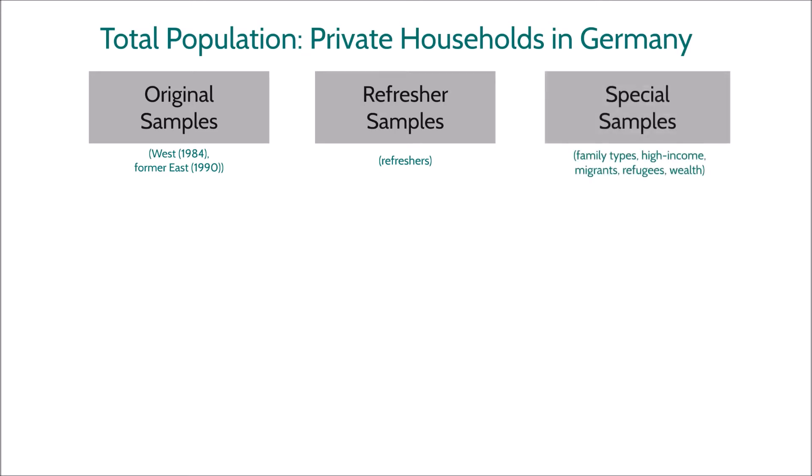Several special samples have been added to allow for analysis of subpopulations that are of particular interest for social policy, but that make up too small a share of the population to be represented adequately through proportional sampling. These include migration samples and samples in which particular family types, such as single mothers, have been oversampled.